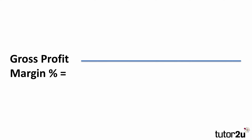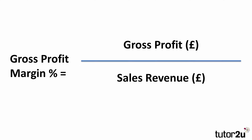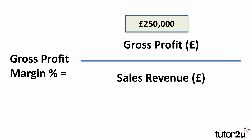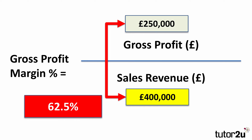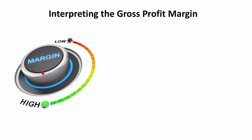Looking at our simple example from the start of this video: the gross profit divided by the sales revenue — the gross profit we worked out was £250,000 divided by the sales revenue of £400,000, always expressed as a percentage, so times by 100. That gives us a gross profit margin of 62.5%.